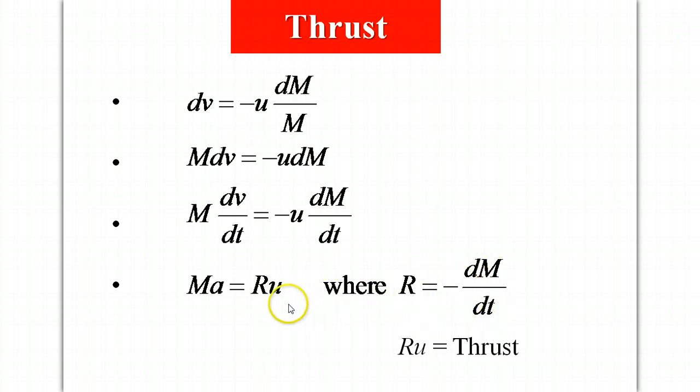This rate is minus dM dt and so we can rewrite the equation that we get in this form. This quantity Ma is the force acting of the rocket so this R times u, the product of the rate at which mass is being expelled times the relative speed of the exhaust, is equal to the thrust, that additional force that pushes the rocket forward and helps it to accelerate.